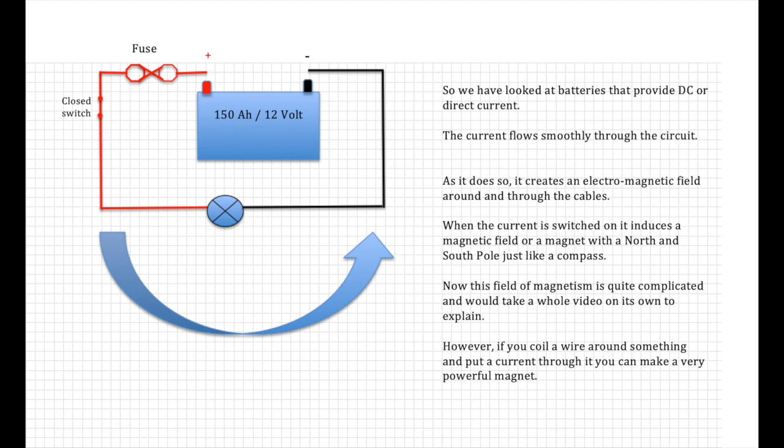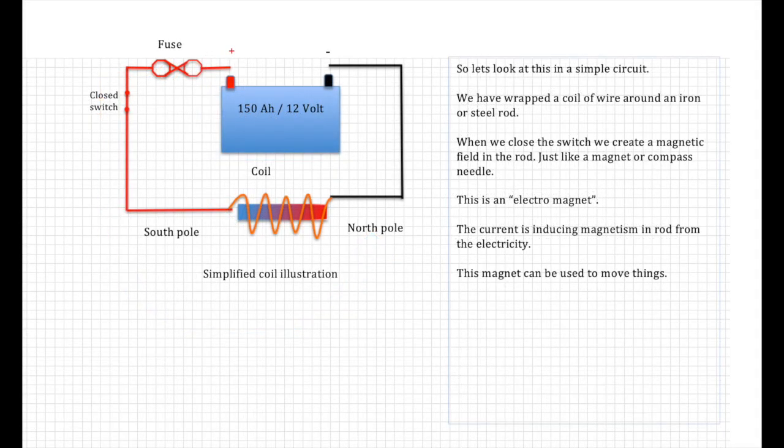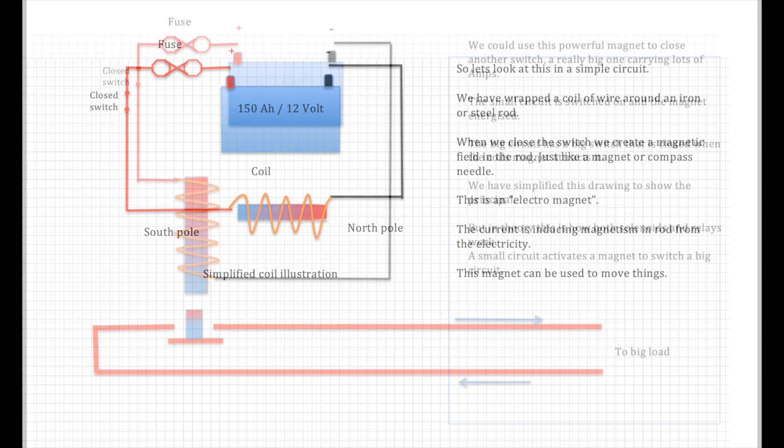The fundamentals are that when you pass current through a cable, it produces an electromagnetic field. So let's look at this simple circuit. We've wrapped a coil of wire around an iron or steel rod. We close the switch, we create a magnetic field in the rod, just like a magnet or a compass needle. This is an electromagnet. The current is inducing magnetism into the rod from the electricity.